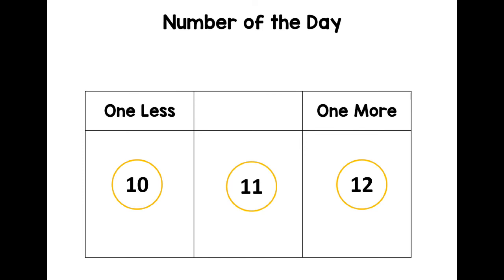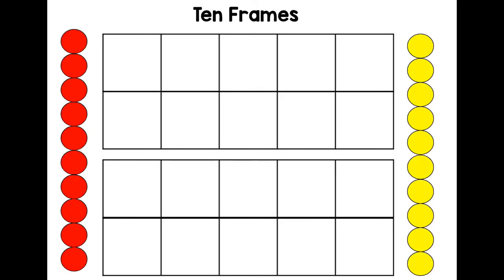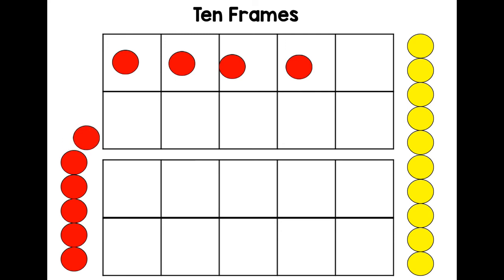Let's have a look at ten frames. One, two, three, four, and one more makes five. Remember with ten frames, when the top line is full, that's five.